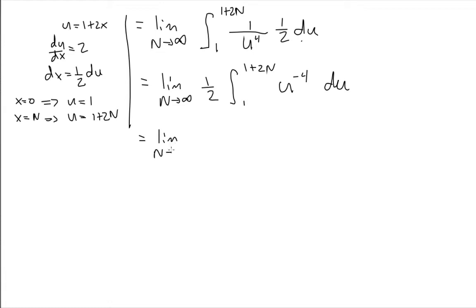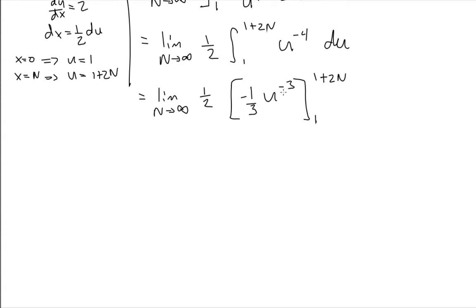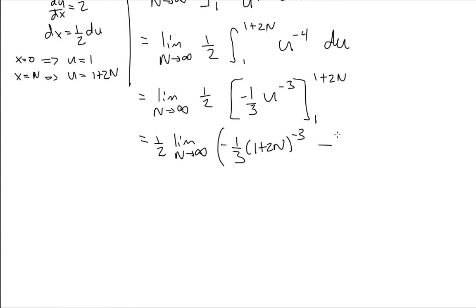Nothing changes with our limit — we still carry around the limit as n goes to infinity of 1/2 — and now I'll actually calculate this definite integral. The antiderivative of u to the power of negative 4 is u to the power of negative 3 times negative 1/3. I'm going to evaluate that at my endpoints which are 1 and 1 plus 2n. I can pull the 1/2 outside of the limit. Plugging in the endpoints: first plug in 1 plus 2n, giving negative 1/3 times (1 plus 2n) to the power of negative 3, minus what I get when I plug in 1, which is negative 1/3 times 1 to the power of negative 3.